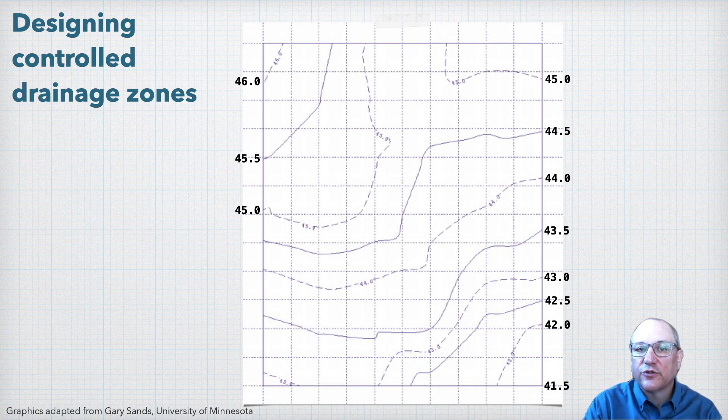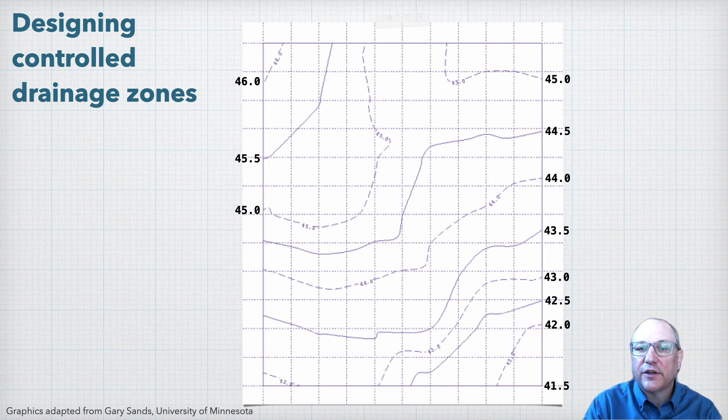So now if we start by designing with controlled drainage in mind, we can think about how to divide the field up into control zones, and then figure out a layout for each zone. We can divide the field into two control zones using a two-foot zone elevation interval, and splitting the field at the 44-foot elevation contour.